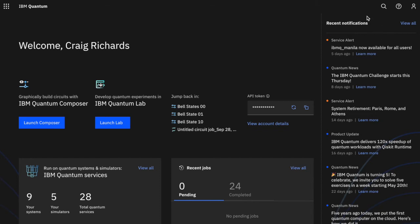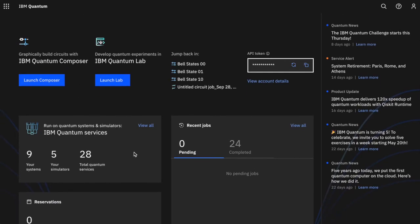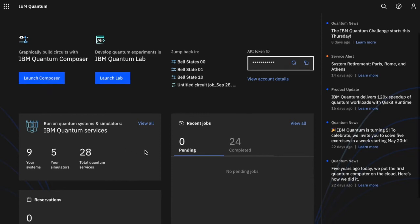Over here on the right are recent updates and recent notifications about changes to the quantum computers that are available. We mentioned in the earlier presentation that you'll need an API token to install the Qiskit SDK. This is where you can find your API token. Just click on the little double box here and it will copy the token to the clipboard for later use. Here we have some previous programs that we've run. Here we can launch labs which are for learning. And here we can launch the Composer. This panel shows us what systems are available to us. The number of quantum systems and the number of simulators. And this is where our previous jobs and our pending jobs will show up.